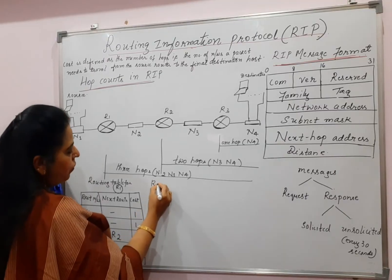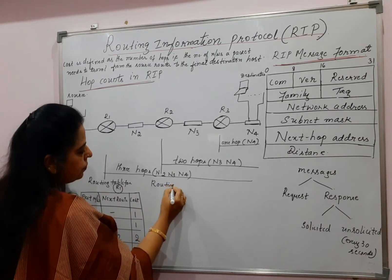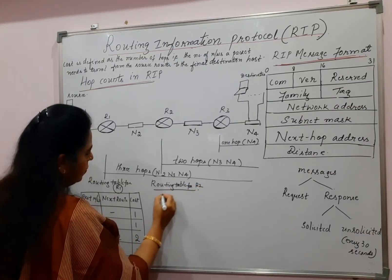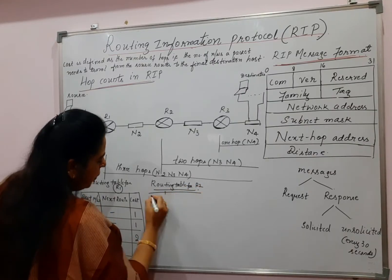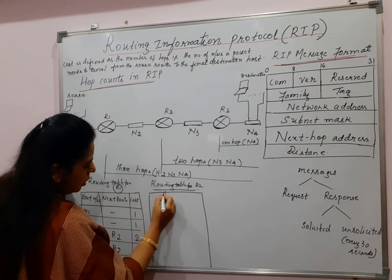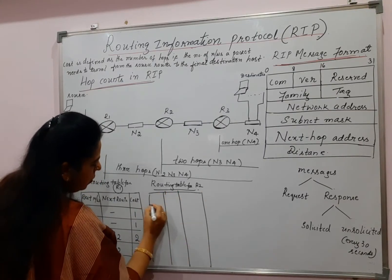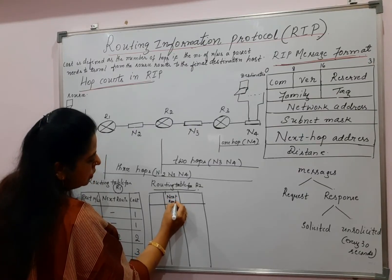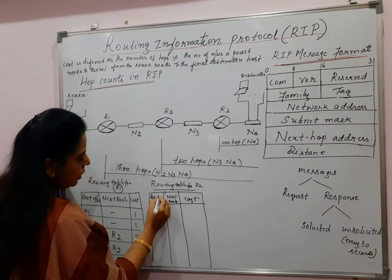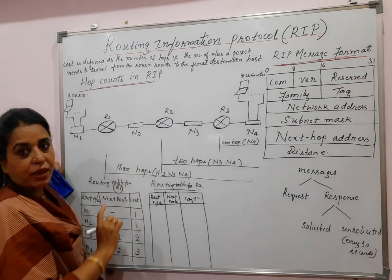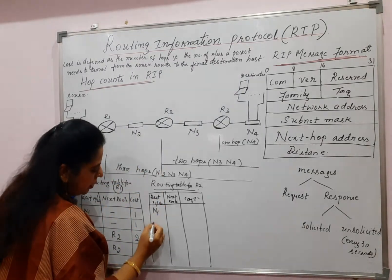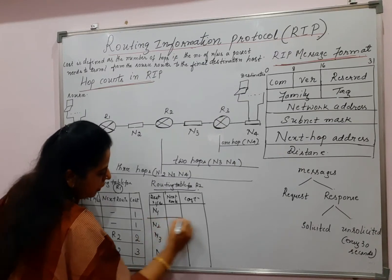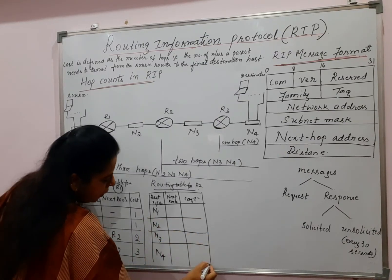Similarly, now construct the routing table for R2. For R2 you are going to write three columns — destination network, next router, and cost. The possible networks in the given network graph are N1, N2, N3, and N4. All four are there.